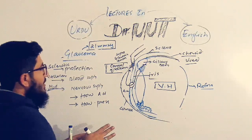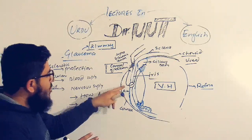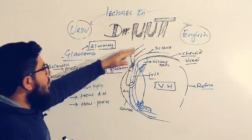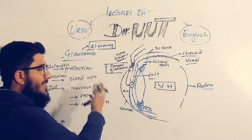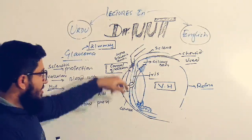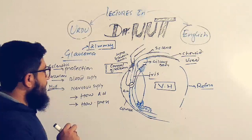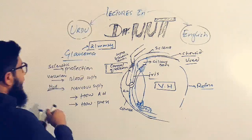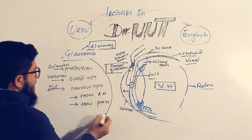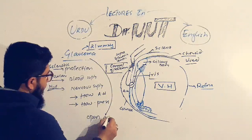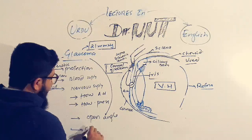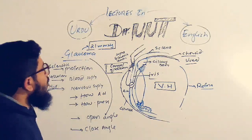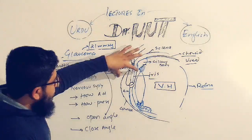What causes accumulation of aqueous humor, or what stops or inhibits its drainage? There are two reasons, and those two reasons correspond to the two types of glaucoma. Glaucoma is of two types: open-angle glaucoma and closed-angle glaucoma.